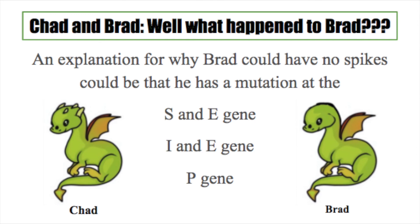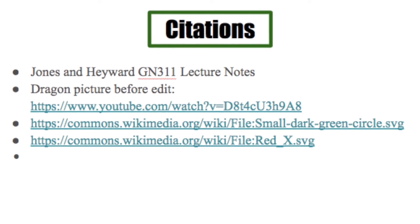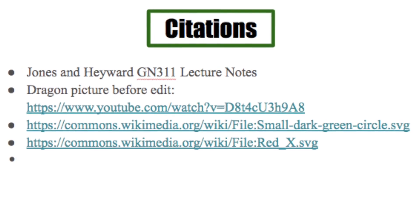What happened to Brad? An explanation for why Brad could have no spikes could be that he either has a mutation at both the S and E gene, or both the I and E gene, or just the P gene. Thank you for watching, and I hope you learned something new.